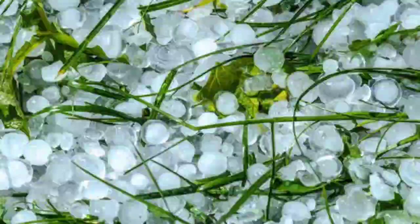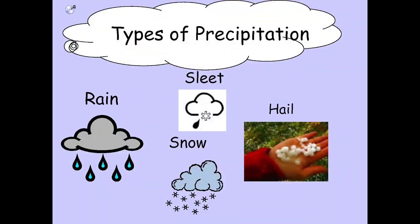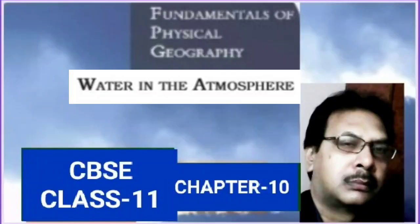These are the different forms of precipitation, and they take place in liquid form or in solid form: rainfall, snowfall, sleet, and hailstones.